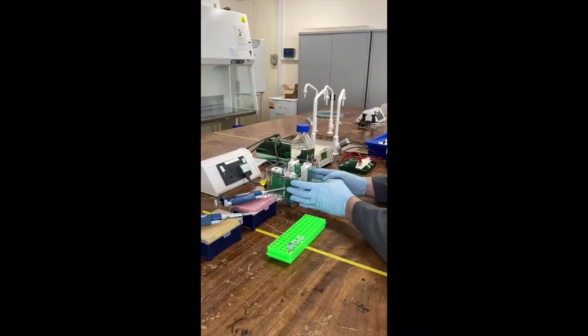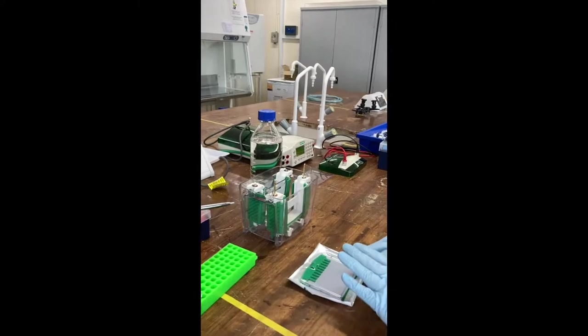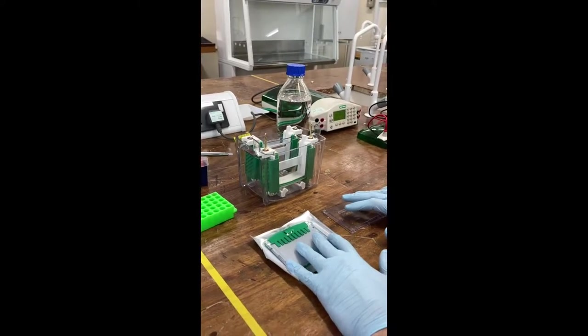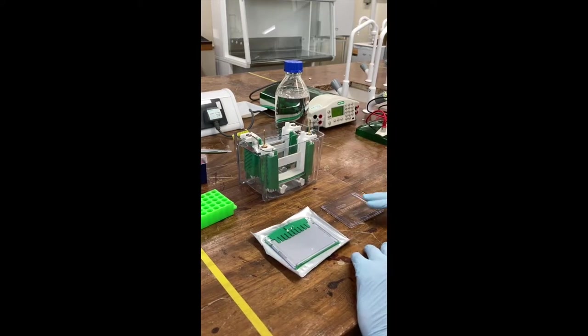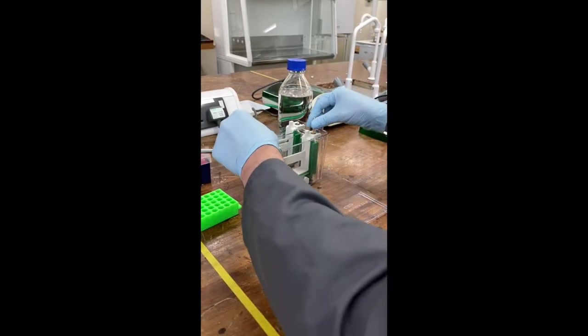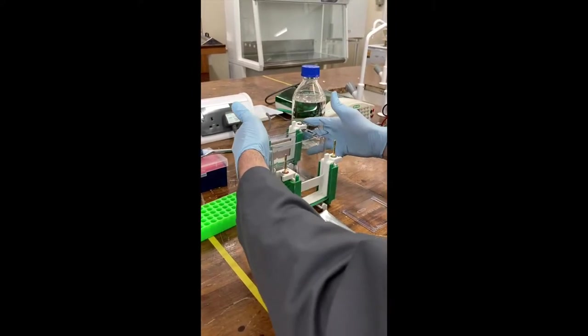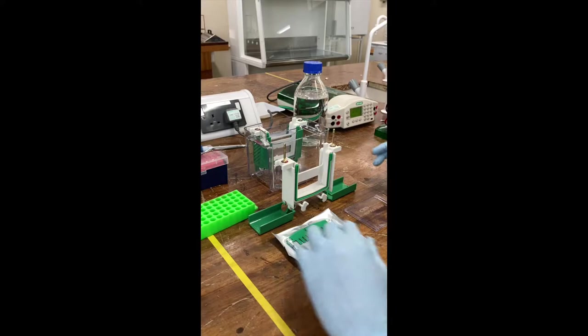To prepare your gel, you're going to need your tank. You're going to need a gel which comes pre-packed. And in this example, because we're only using the one gel, we also need a buffer dam. So what you need to do is you need to take this out of the tank and you're going to open these two flaps on the side.